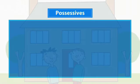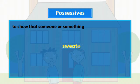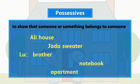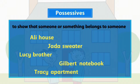We use possessives to show that someone or something belongs to someone. We form the possessive by adding an apostrophe and an S after someone's name.